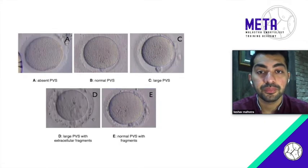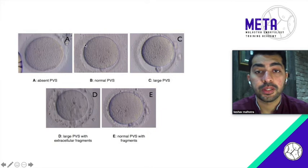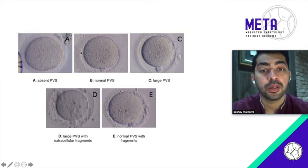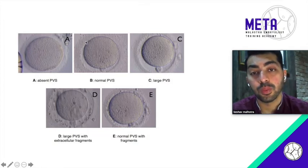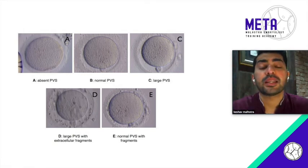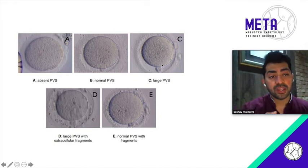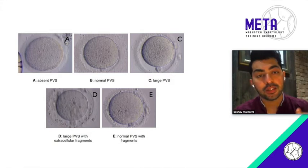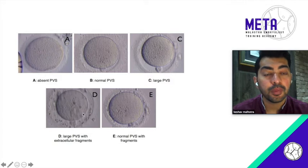The perivitelline space should be small — meaning one-third of the oolemma should be in contact with the inner membrane of the zona pellucida, and two-thirds should be free. When there is a large perivitelline space, during ICSI when you poke the egg with the injection needle, there is a high probability the egg moves around and can be damaged if you're not careful.